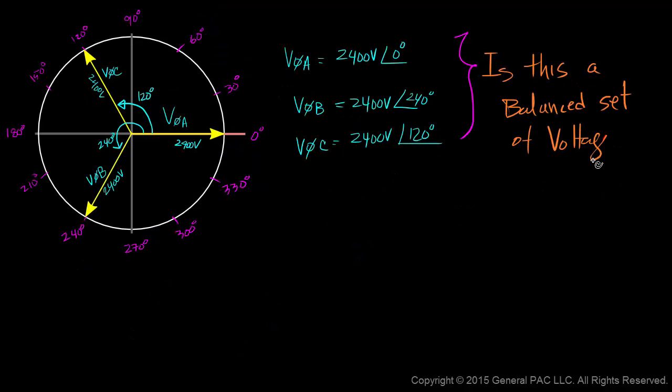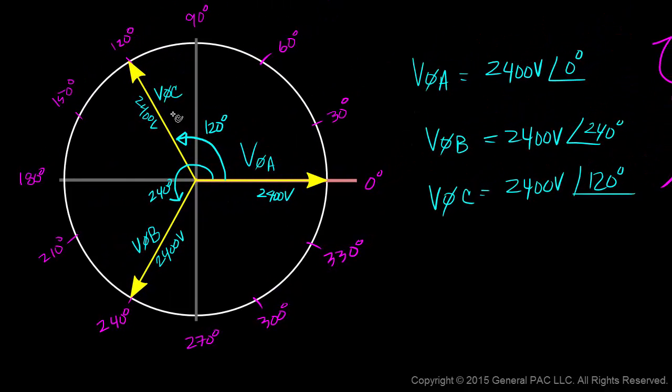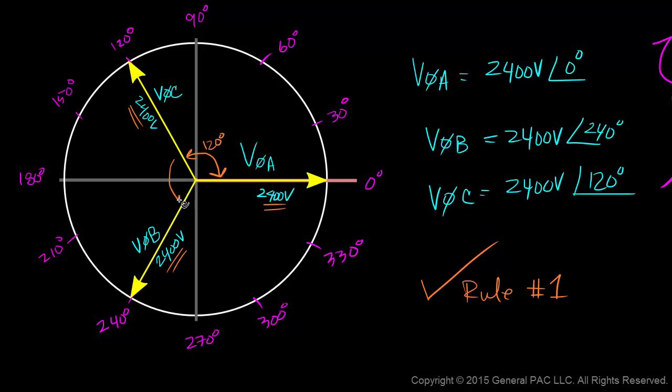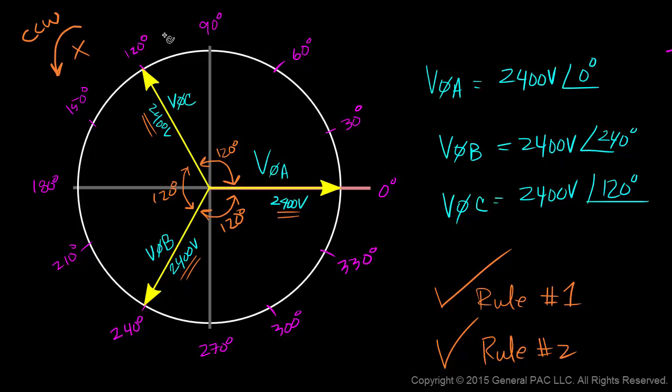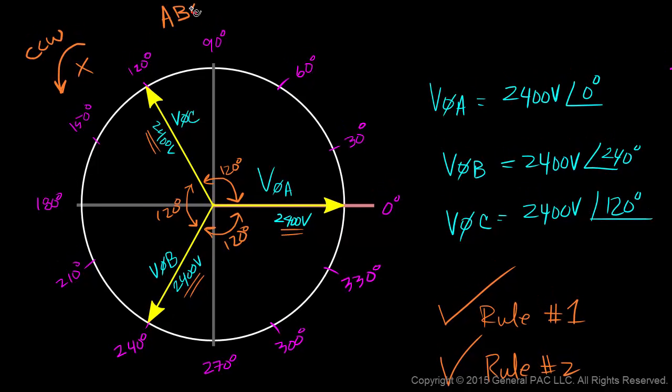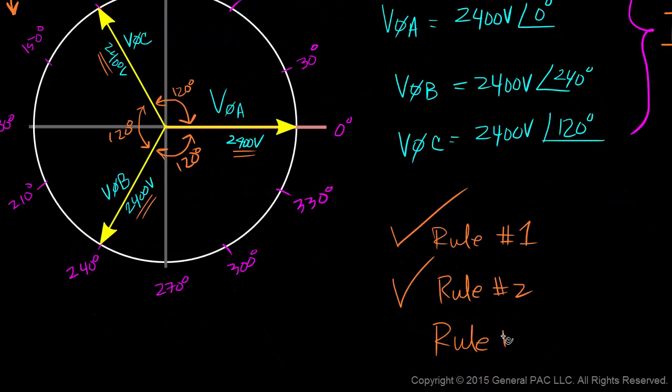Is this a balanced set of voltages? Well, let's see. We have equal magnitudes of 2400 volts for phase A, B, and C voltages. So we follow rule number one. We have 120 degree phase displacement between all three phasors. So we follow rule number two. And we're assuming that all three phasors are rotating in a counterclockwise direction. And while they rotate, the three phasors produce an A, B, C phase rotation or phase sequence. So we're following rule number three.